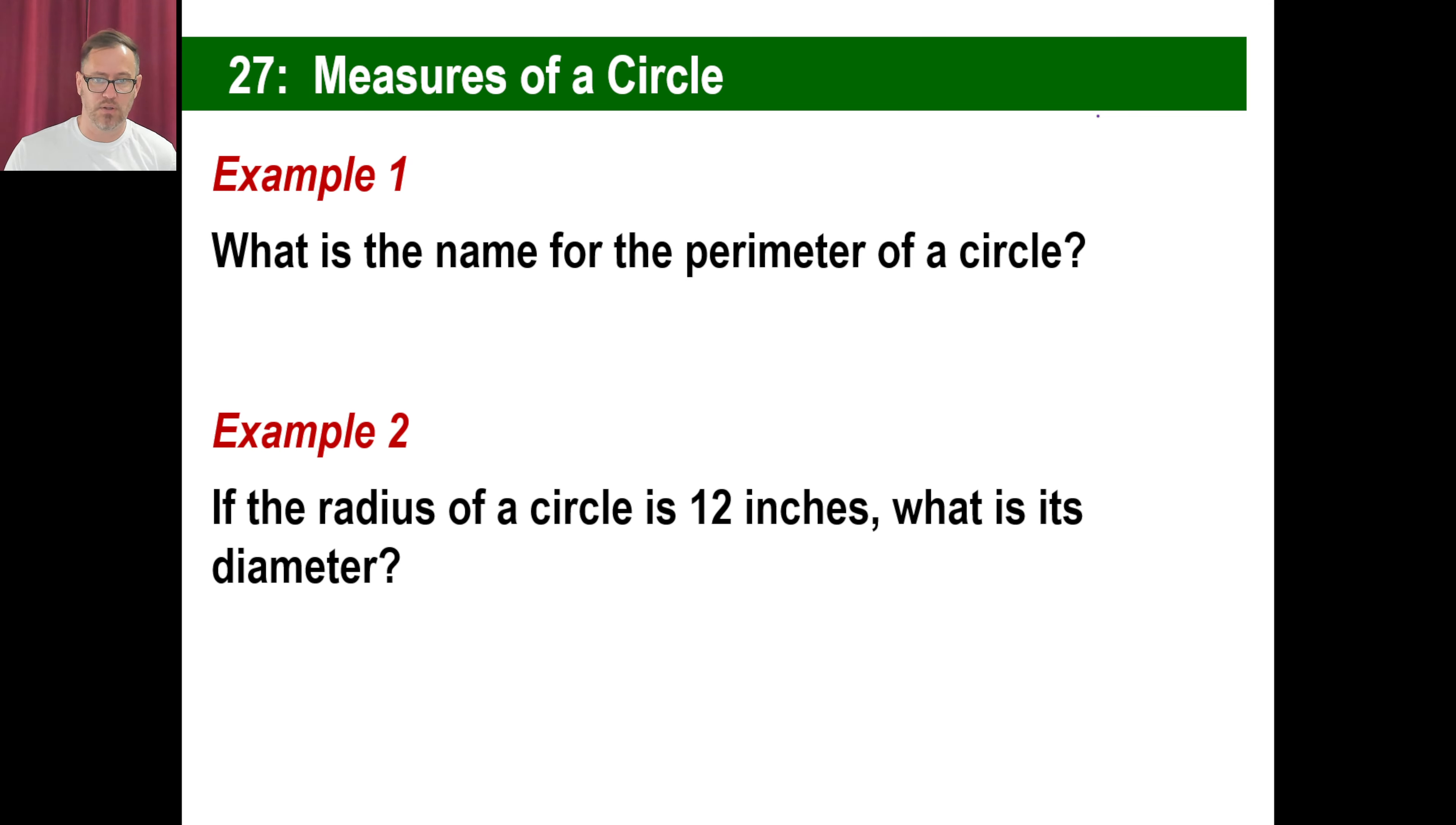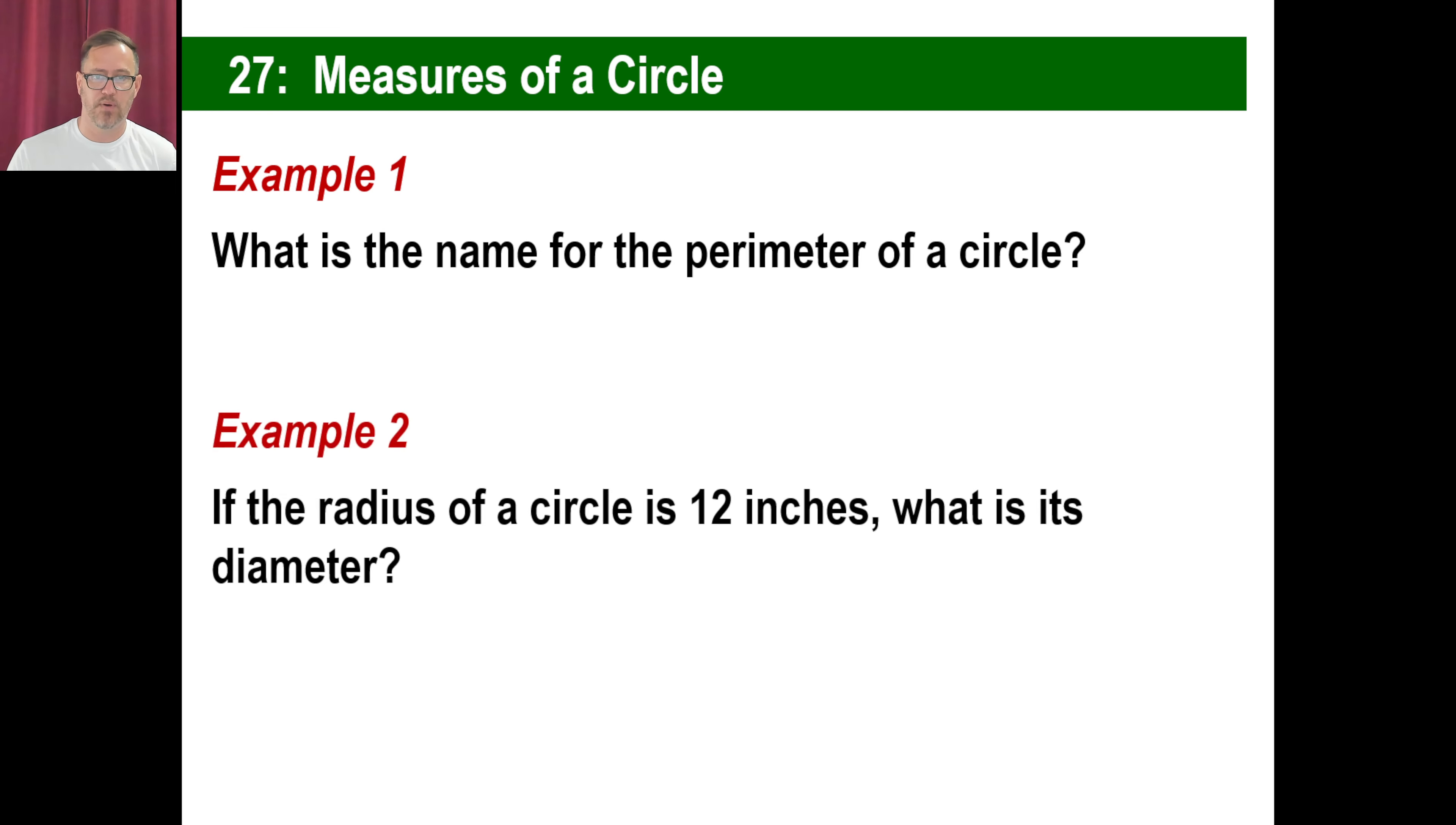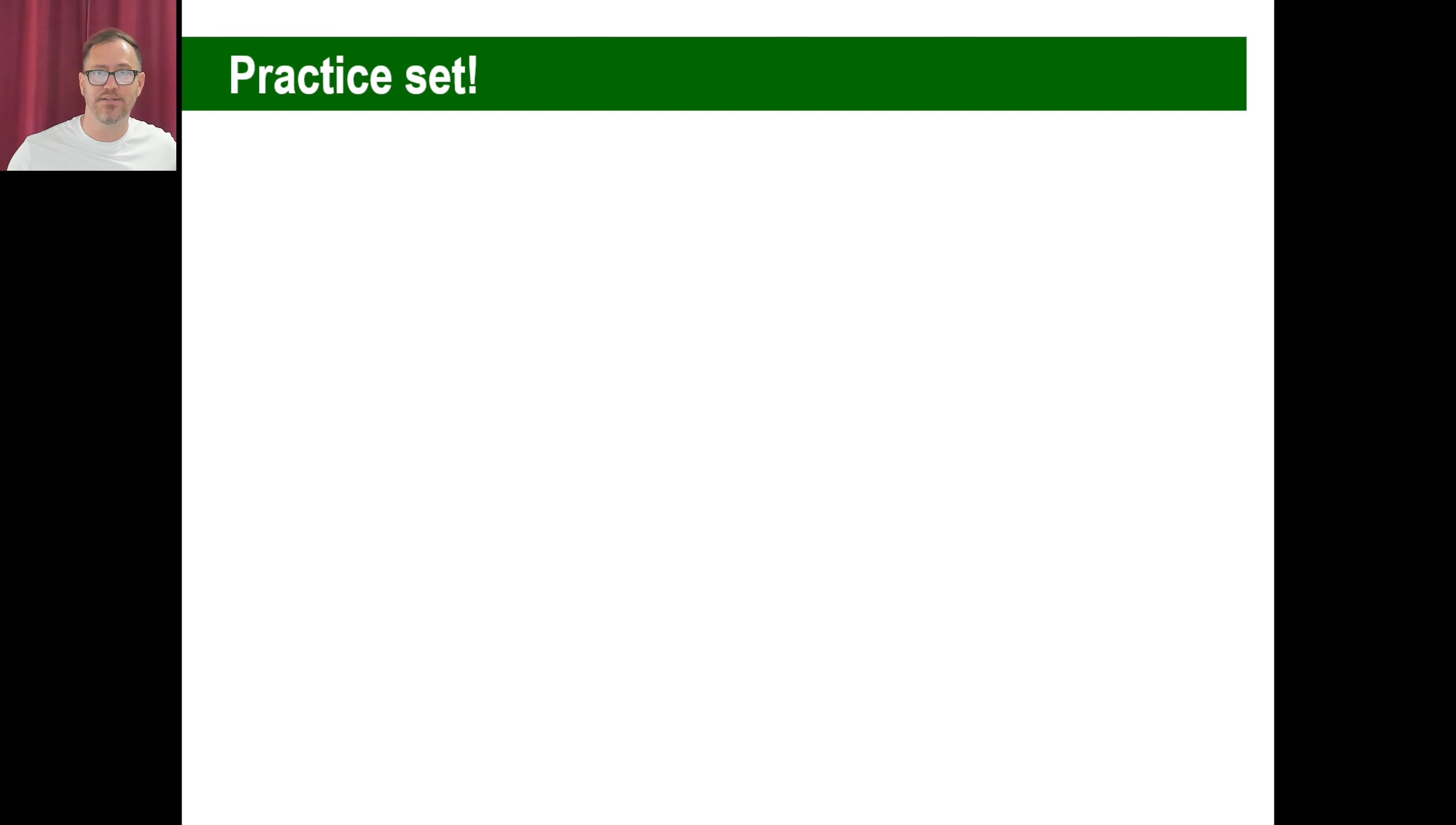If the radius of a circle is 12, what is its diameter? Let's go back here. Well, there's a radius, right? Let's say this radius is 12 right there. What's the diameter? Of course, it's going to be twice that, or 24, right? Okay. Isn't that easy?